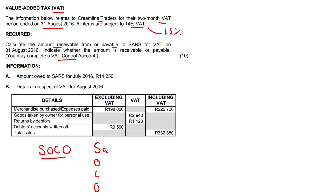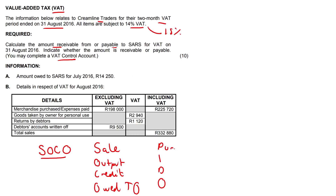SOCO stands for: S — sell, O — output, C — credit, O — owed to SARS. So the opposite would be PEDO: P — purchase, E — input, D — debit, O — owed by SARS. So this is when SARS owe you.